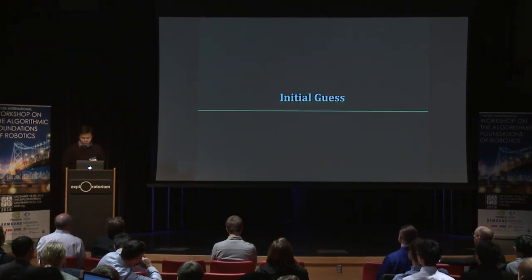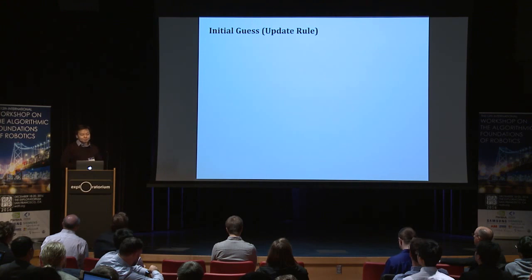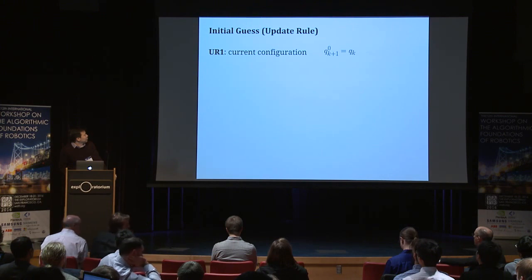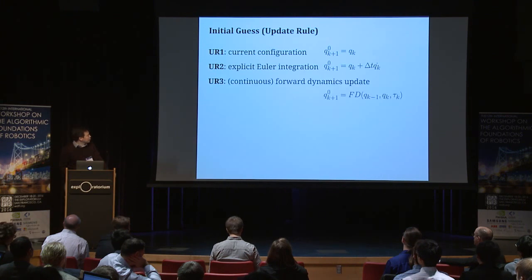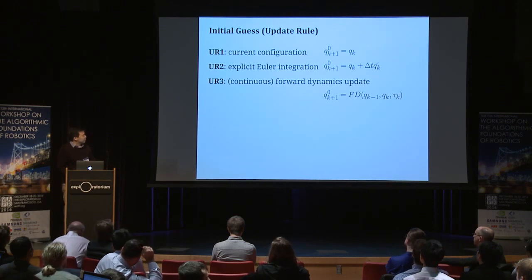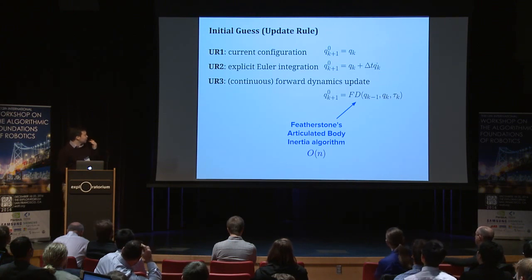The first part is the initial guess. If we start with a good enough initial guess, we could save some root-updating iterations, which are expensive. The simplest way is to use the current configuration as the initial guess for the next one. A slightly fancier approach is explicit integration. The third option — which we use — is applying the continuous forward dynamics algorithm, which is identical to any continuous forward dynamics update. Thanks to Featherstone's Articulated Body Inertia algorithm, we can compute this initial guess in linear time.